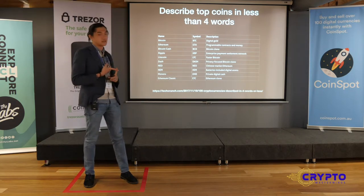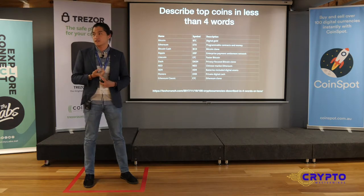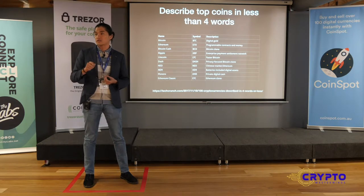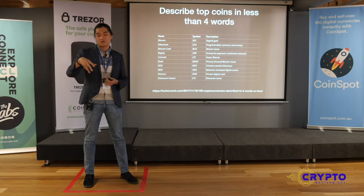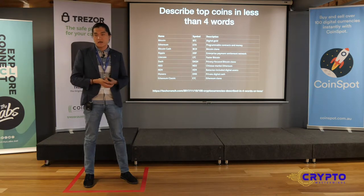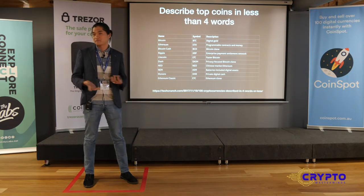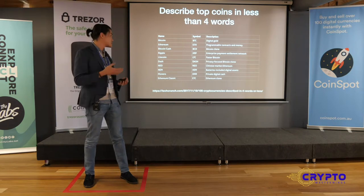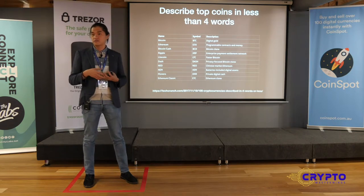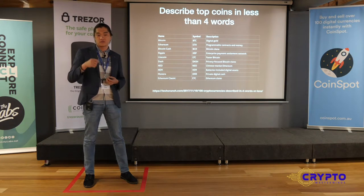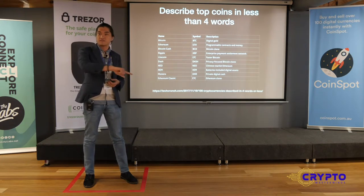If you start looking at something like Ethereum, the way I like to describe it is that it's a digital arcade token. You put in a token and the arcade will execute an instruction you've given it. Say it was a Pac-Man machine — if you put your Ethereum in, you can play Pac-Man. Essentially it's programmable contracts: you can program money to do certain things, like when you put $10 into a contract, it sends $5 to person A and $5 to person B.